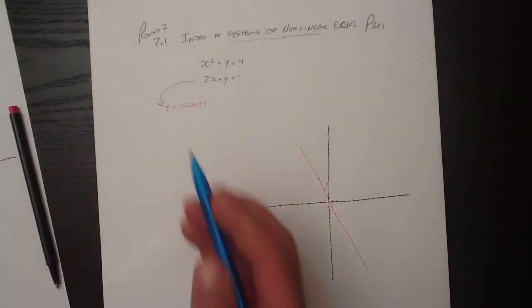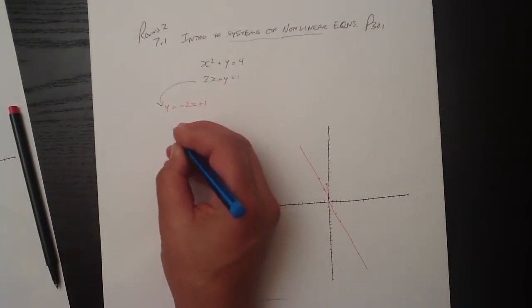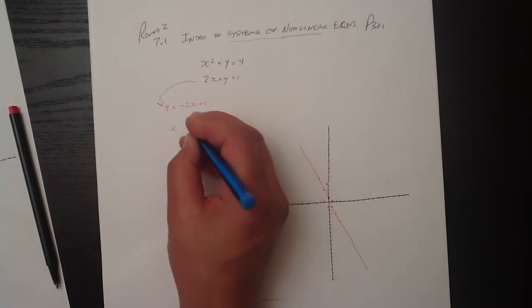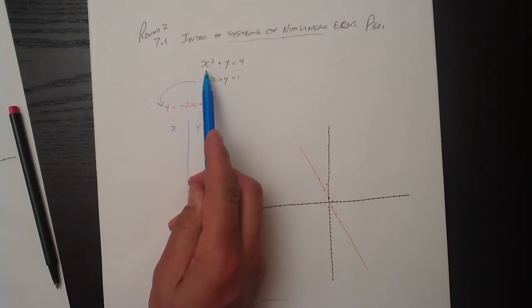In order to graph the second one, x squared plus y equals 4, we're just going to make a little table where there's x and y. And because x is x squared in this function,